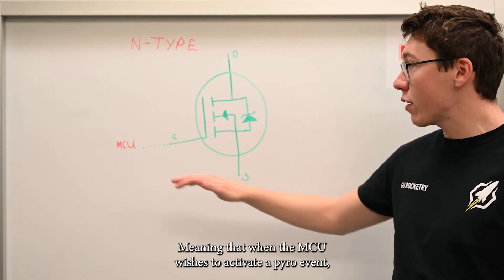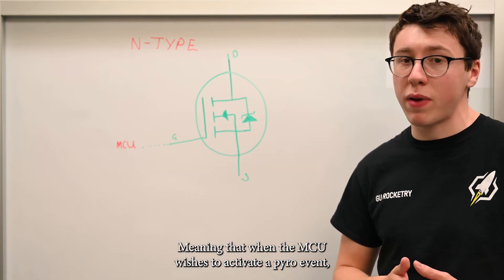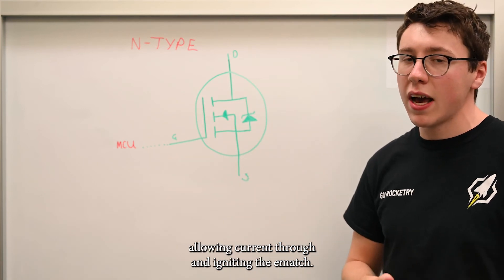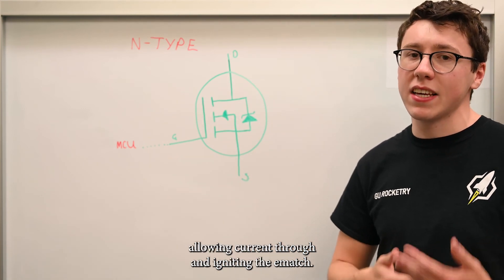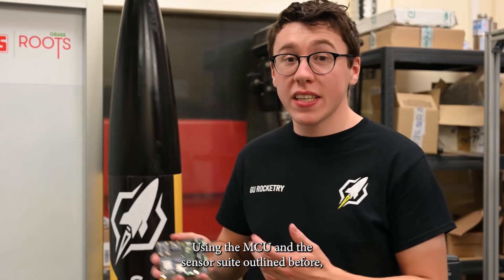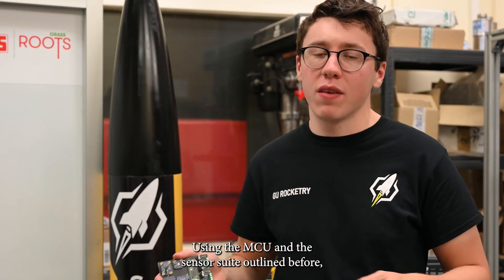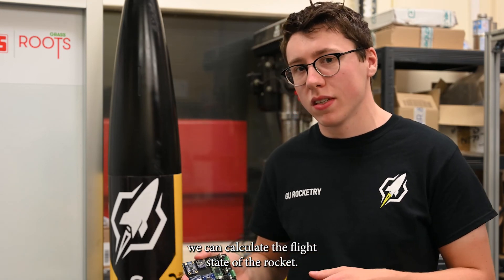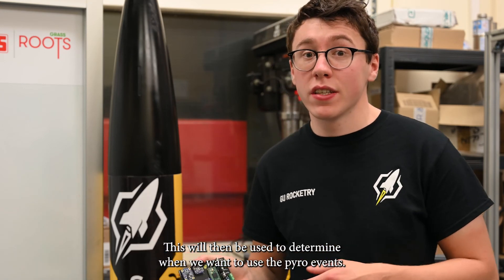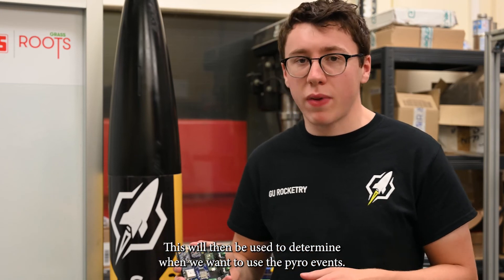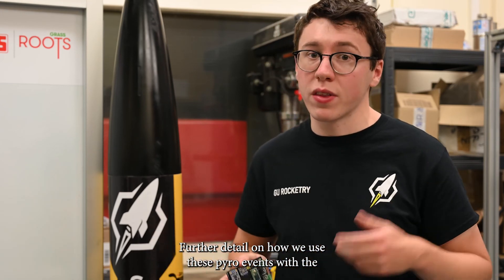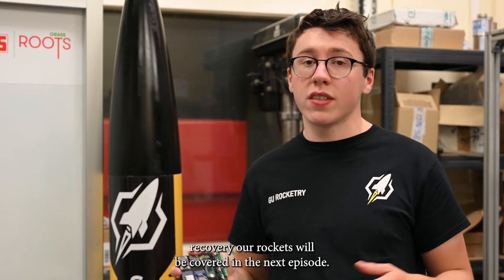Meaning that when the microcontroller wishes to activate a pyro event, it sends a high signal to the gate, exceeding the gate threshold, allowing current through, igniting the E-match. Using the MCU and the sensor suite outlined before, we can calculate the stage of the flight of the rocket. This will then be used to determine when we activate these pyro events. Further detail of how we use these pyro events with the recovery of our rockets will be discussed next time.